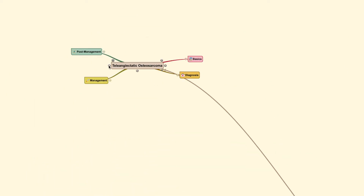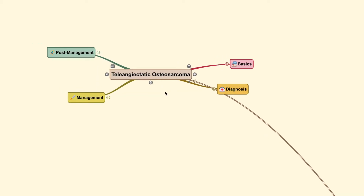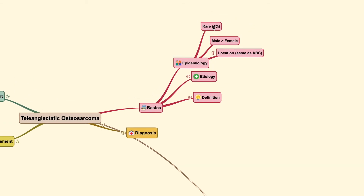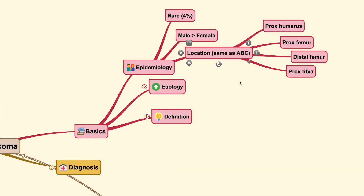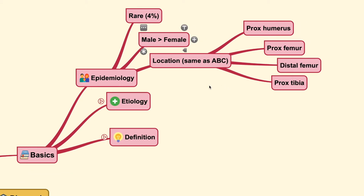I reserved this for last because it is quite different and it is easy to differentiate this type of osteosarcoma once you get used to the details. This type of tumor occurs in a quite rare manner compared to the classic type and is generally found more commonly in males than females. What makes it interesting is that its location is similar to those found in an ABC — aneurysmal bone cyst.